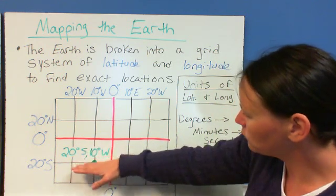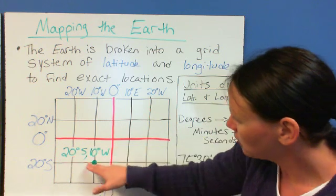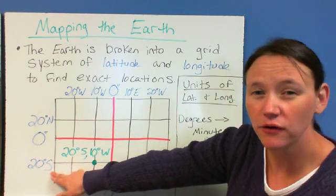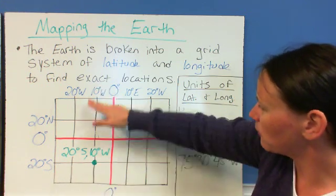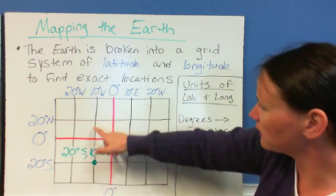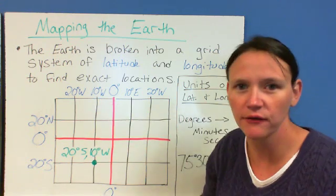First, latitude, you come down. You look right here. Oh, 20 degrees south. That's always going to go first with latitude. And then, longitude, we go up and down. And we can see that, oh, we're 10 degrees west.